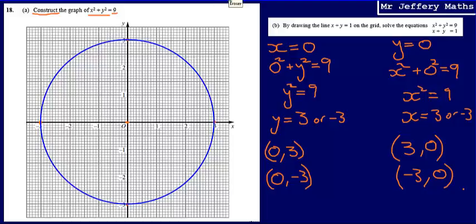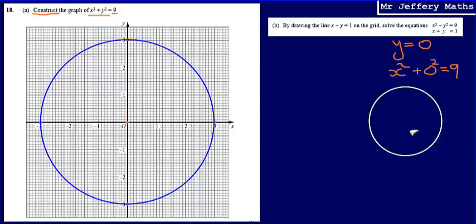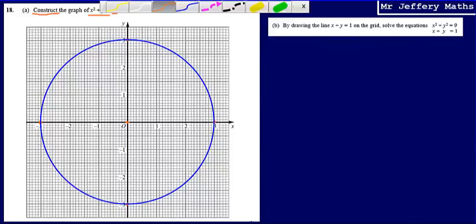So that's part A. On to part B. I'm just going to get rid of this stuff here. So part B, we're asked to, by drawing the line x plus y is equal to 1 on the grid, solve the equations x squared plus y squared is equal to 9, x plus y is equal to 1.